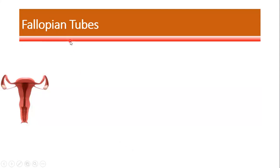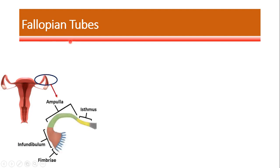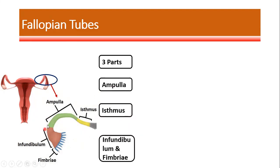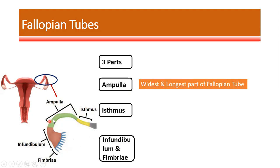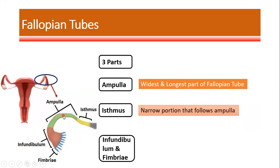Moving on, let us understand the fallopian tubes. There are two fallopian tubes, starting from the top of the uterus. The fallopian tube has three parts: the ampulla, the isthmus, and the infundibulum with fimbriae. The ampulla is the widest and longest part of the fallopian tube and is the area where fertilization takes place — where the sperm fertilizes the ovum, marking the beginning of pregnancy.